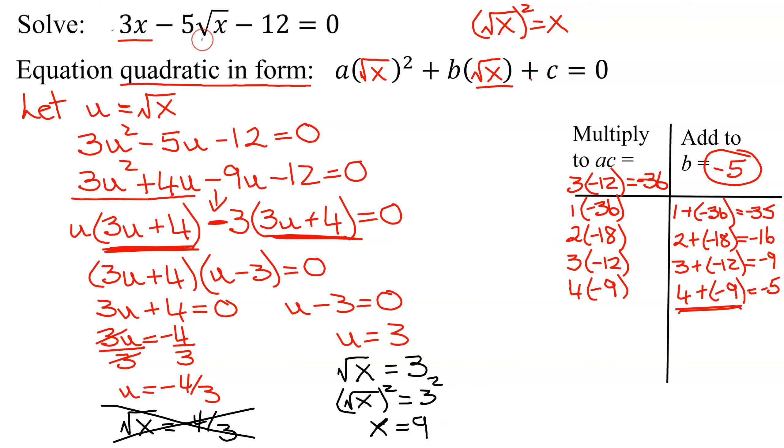But I'm not done yet. Remember, my original equation had a square root in it. So I must check my answer. So plug 9 into the original equation. Does 3 times x, which is 9, minus 5 times the square root of x, well, x is 9, minus 12, does it equal 0?